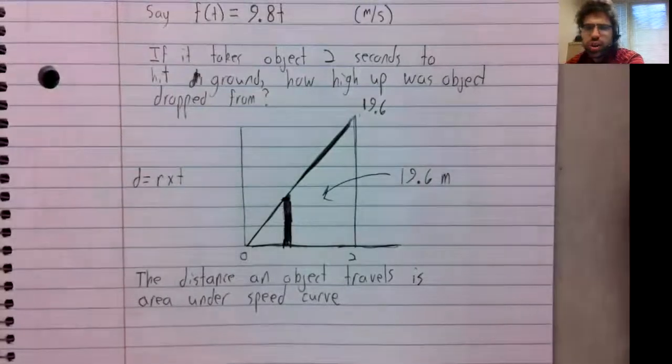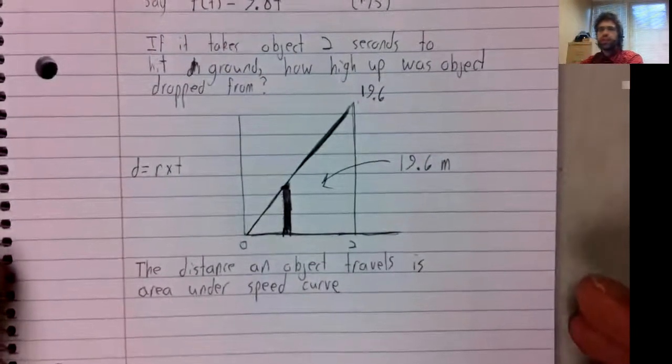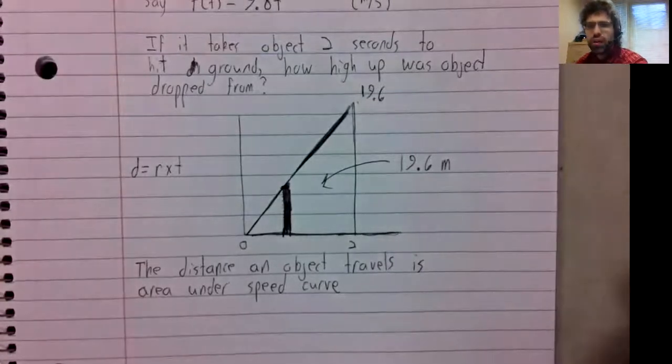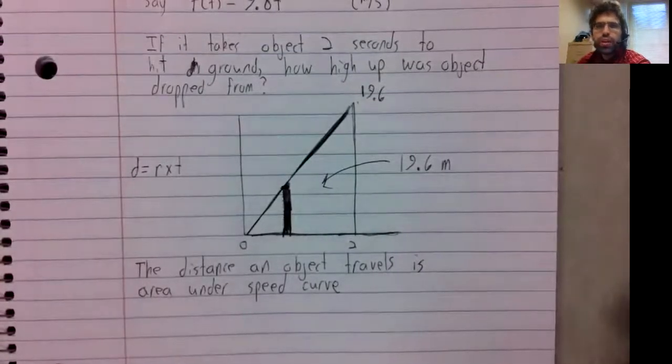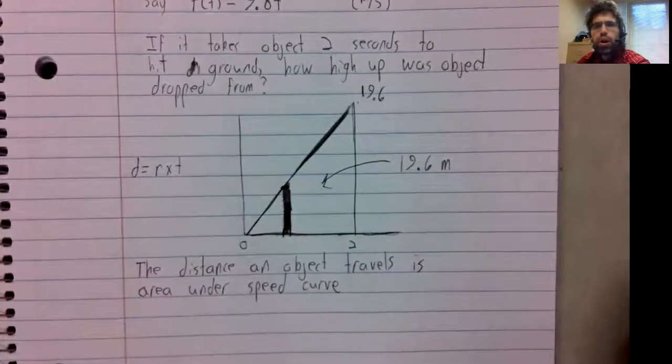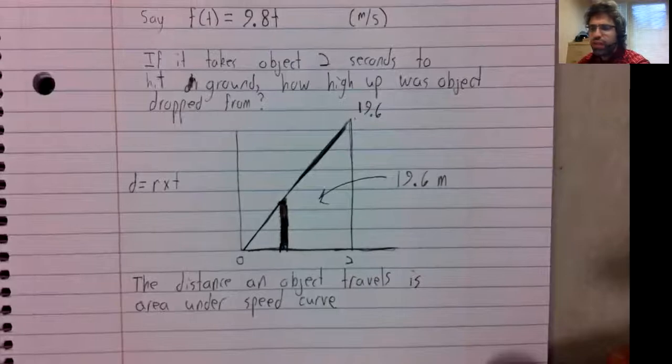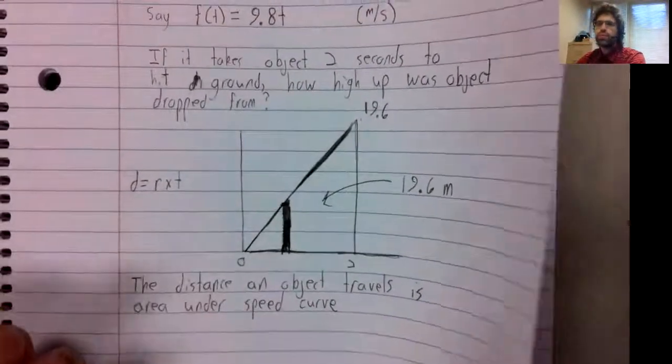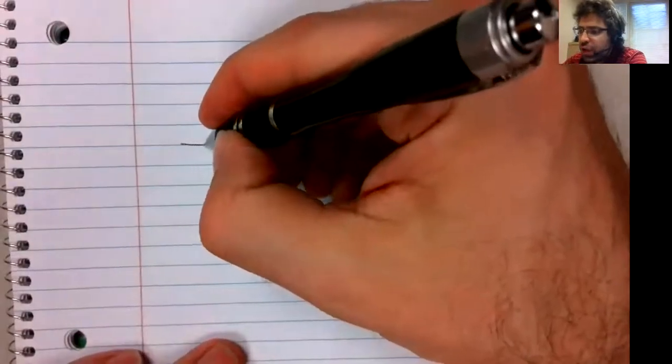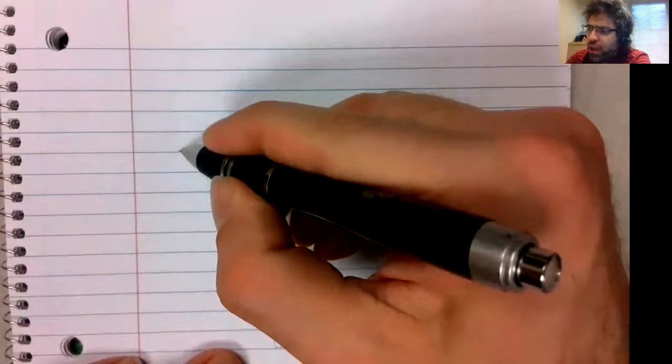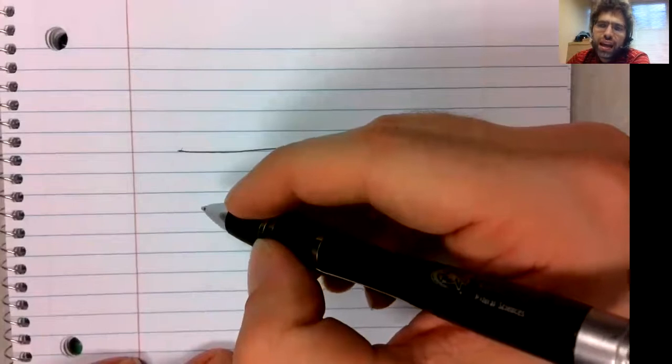What if we have a more complicated speed function though? For example, realistically, if the object is falling 19.6 meters, that's a long way to fall. And it's probably not correct to neglect air resistance.